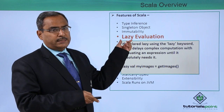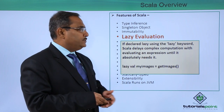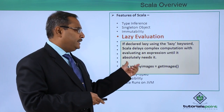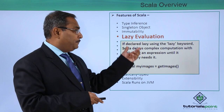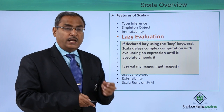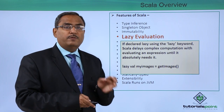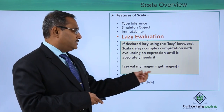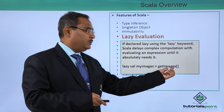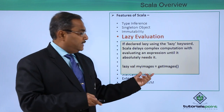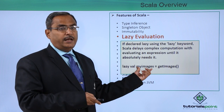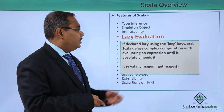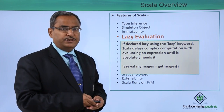The next property is lazy evaluation. If declared with the 'lazy' keyword, Scala delays complex computation by evaluating an expression only when it is absolutely needed. For example, 'lazy val myImages = getImages()' — this variable will be evaluated on demand, not prior to that. That is why lazy evaluation is one of the features of Scala.